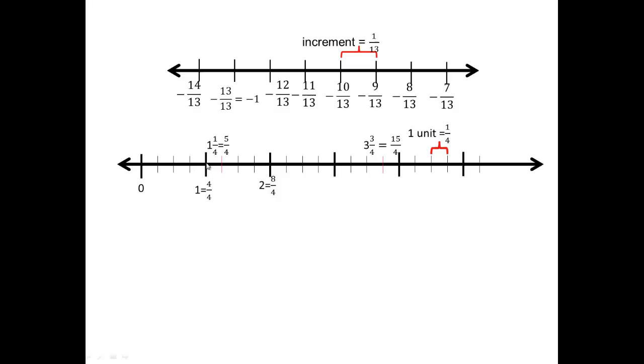Then 5 fourths, 6 fourths, 7 fourths, 8 fourths. What do you think this tick mark will be here? 9 fourths, 10 fourths, 11 fourths, that's what this tick mark will be. So each tick mark here is a quarter of a unit.